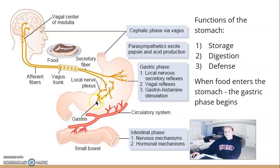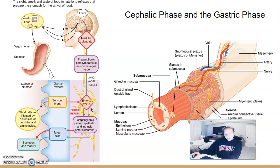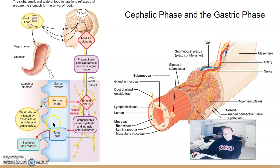The third phase is the intestinal phase, which begins once food enters the intestine. Once food enters the stomach, that's the start of the gastric phase. The next slide gives a nice overview of how the cephalic phase interacts with the gastric phase: food initiates at sight, smell, or taste, signals travel to the medulla oblongata, then through the vagus nerve to the enteric plexus, which goes to post-ganglionic neurons that activate three specific target cells. Local neurons in the gastric phase can also detect distension and amino acids or peptides, which then activate certain cells.